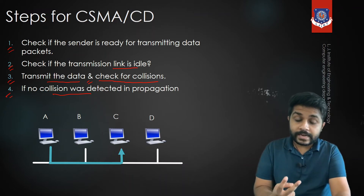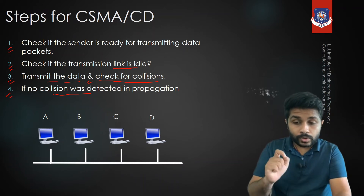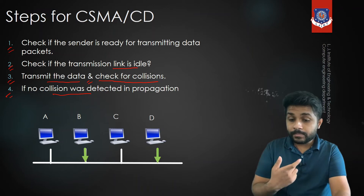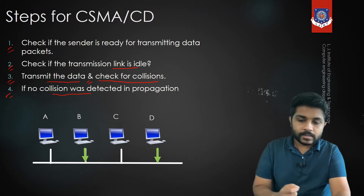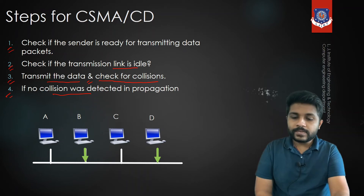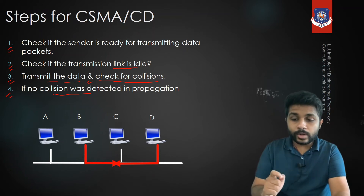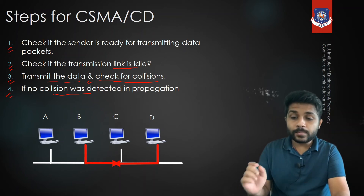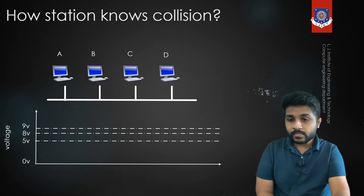Now consider what happens if two devices send data at the same time. Suppose B and D both want to send data to C. They will sense the channel simultaneously, both find it idle, and both send data. After some time their data will collide, and when there is a collision, no device can receive proper data — all devices receive junk data.